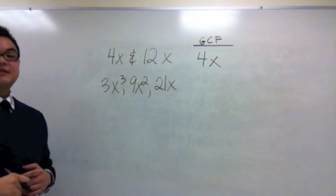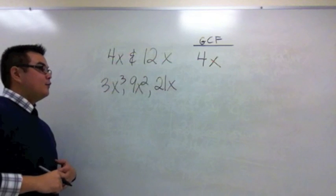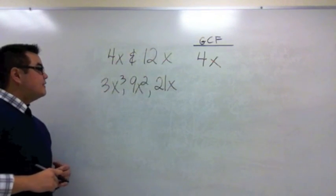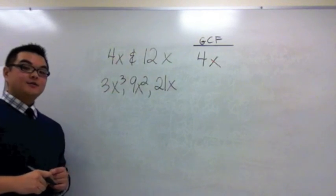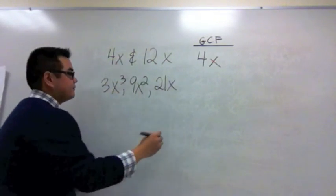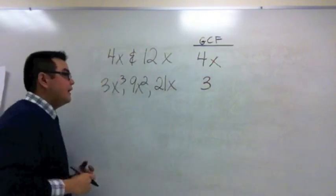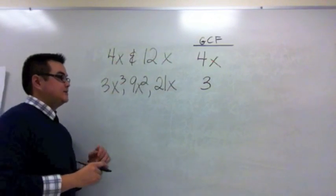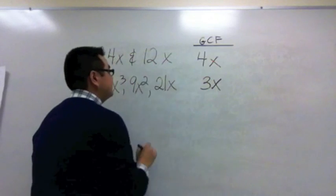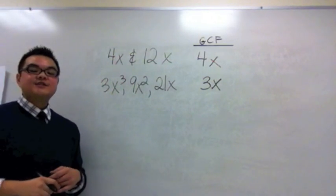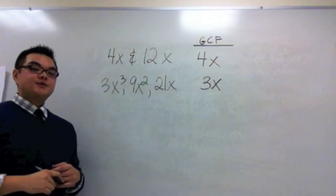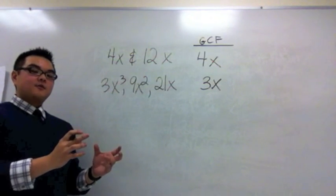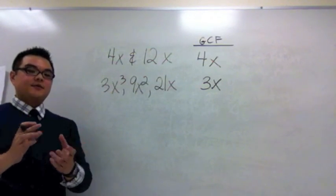We can also find the GCF for 3 numbers with variables as well. We're going to do it the same way as before. The GCF for 3, 9 and 21 is 3. And the GCF for x cubed, x squared and x is x. So finding the GCF for numerical and variable expressions, we treat the two methods separately. We look at the numerical parts first and then we look at the variable parts second.